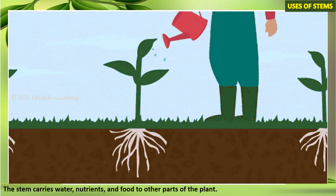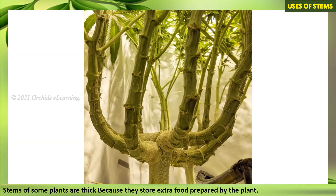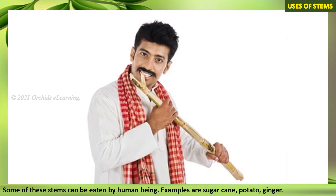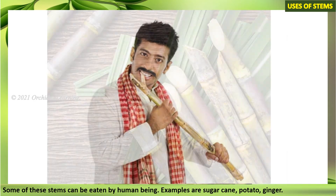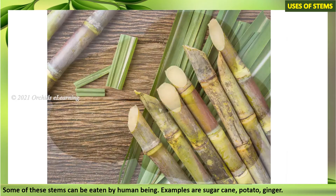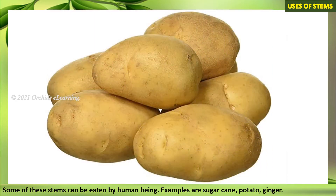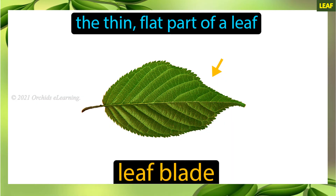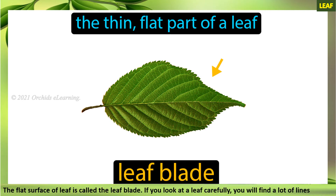Stems of some plants are thick because they store extra food prepared by the plant. Some of these stems can be eaten by human beings — examples are sugarcane, potato, and ginger.